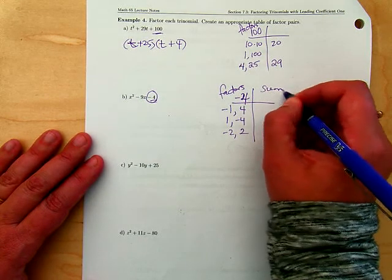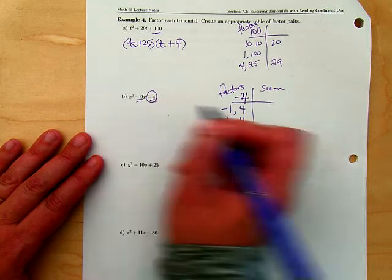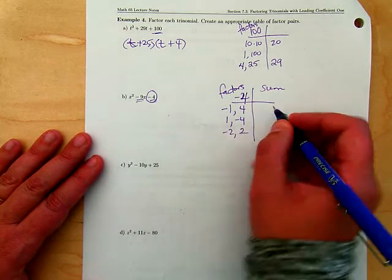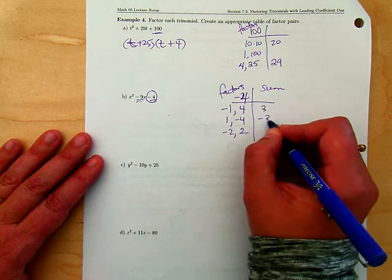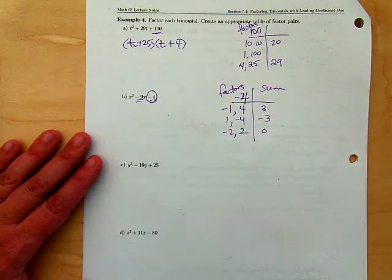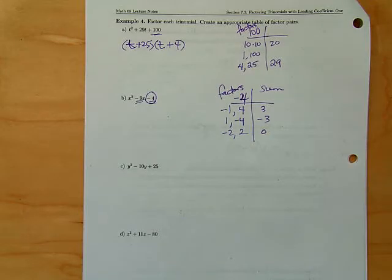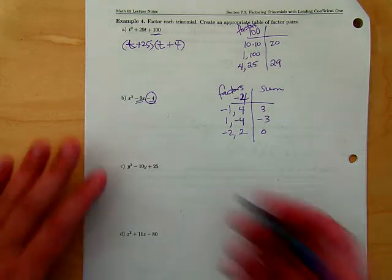Now I add them up. I'm looking for a sum of negative nine. Three, negative three, zero. There is no sum of negative nine, so what does this mean? It's prime. It can't be factored.